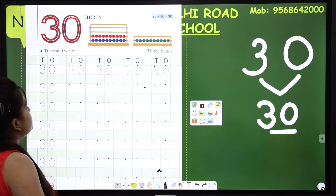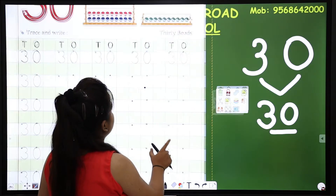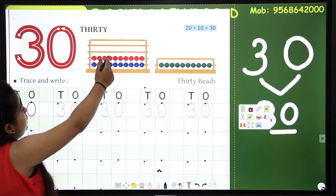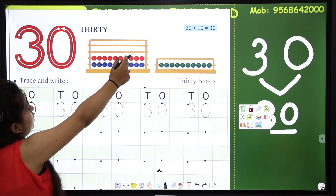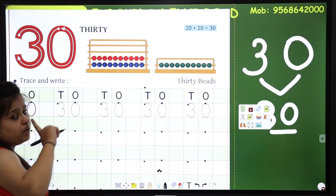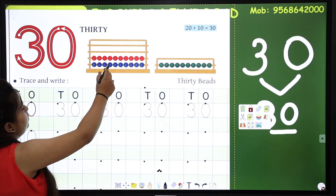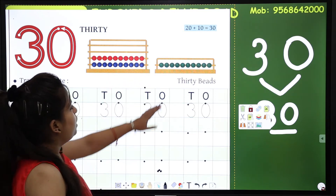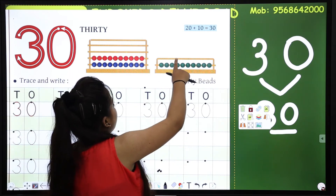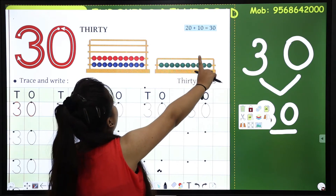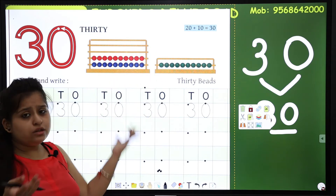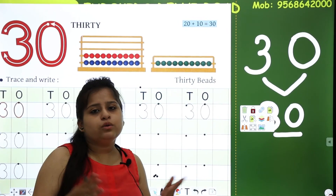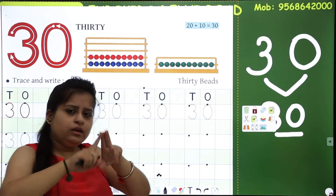Okay. Let's check out the counting first. Count along with me: 1, 2, 3, 4, 5, 6, 7, 8, 9, 10. Then blue: 11, 12, 13, 14, 15, 16, 17, 18, 19, 20. 20 beads here. And how many beats are these? 1, 2, 3, 4, 5, 6, 7, 8, 9, 10. This is 20 and this is 10. 10 is your mother's fingers, 20? And 10 is your father's. How many beads total? 30. So when 20 and 10 fingers add, it becomes 30.